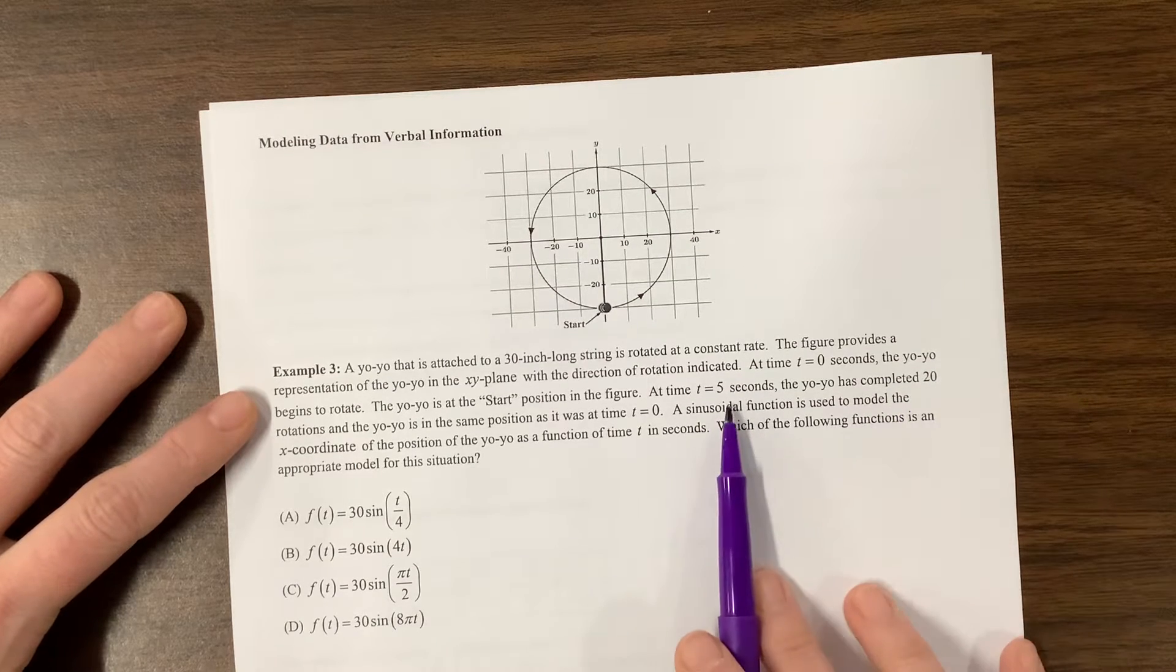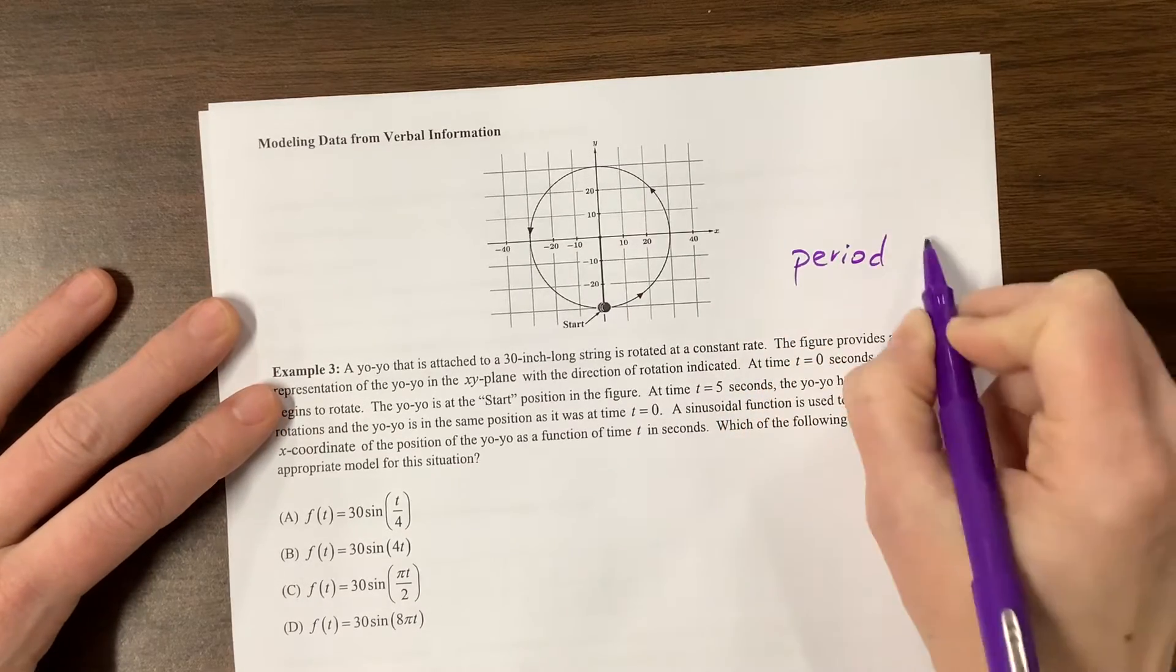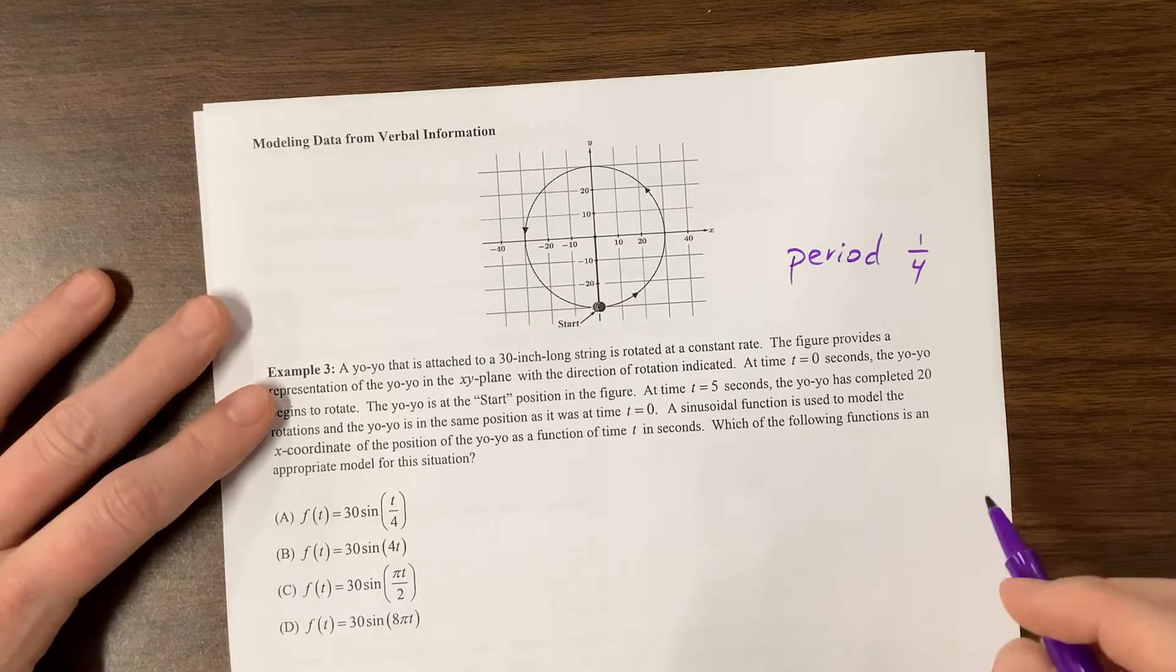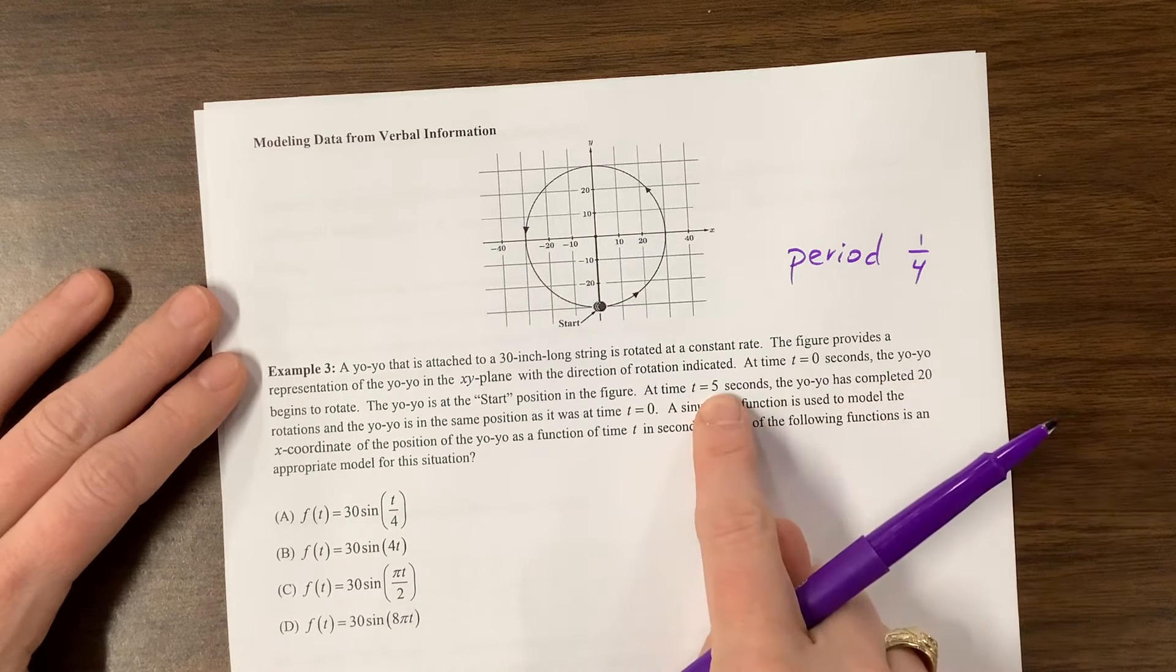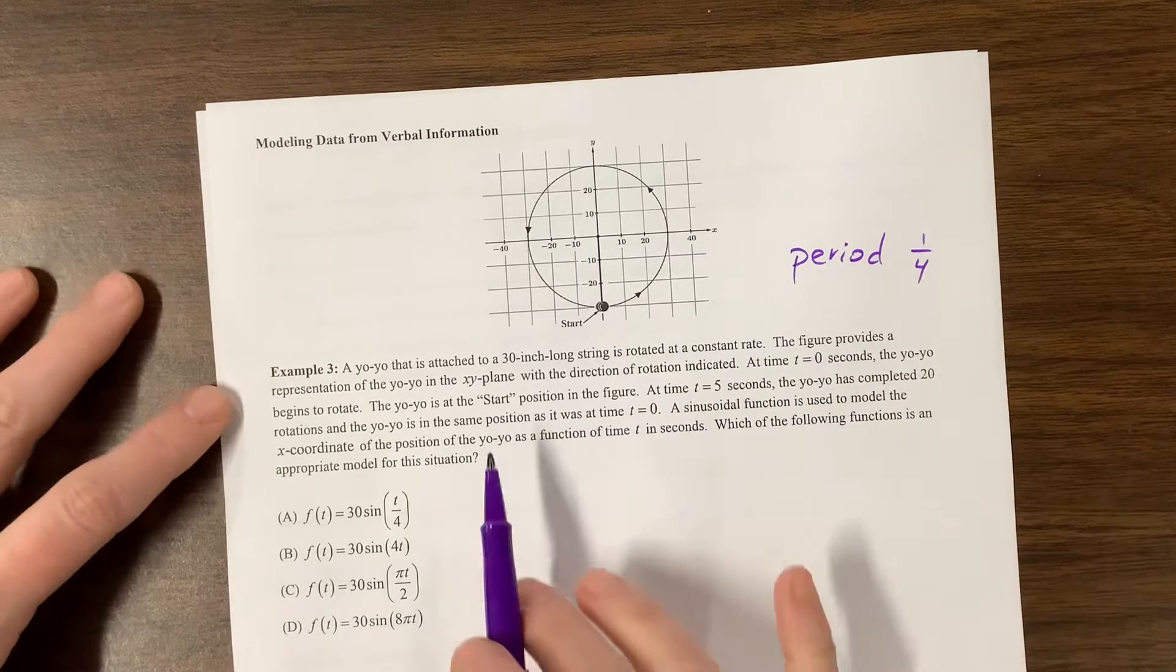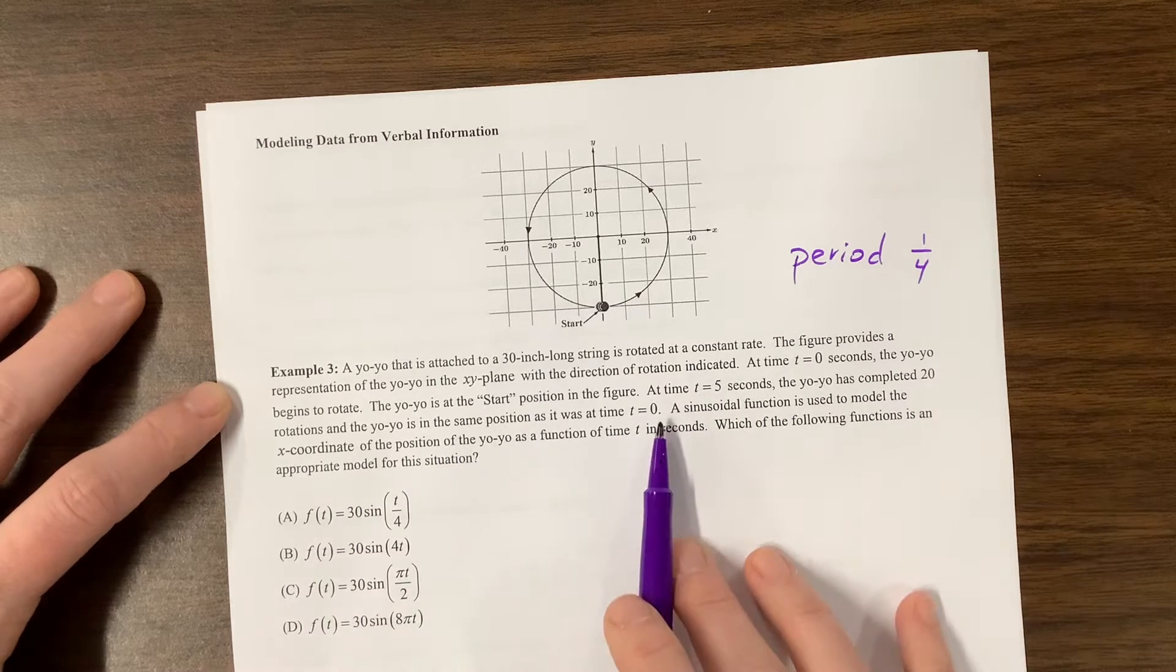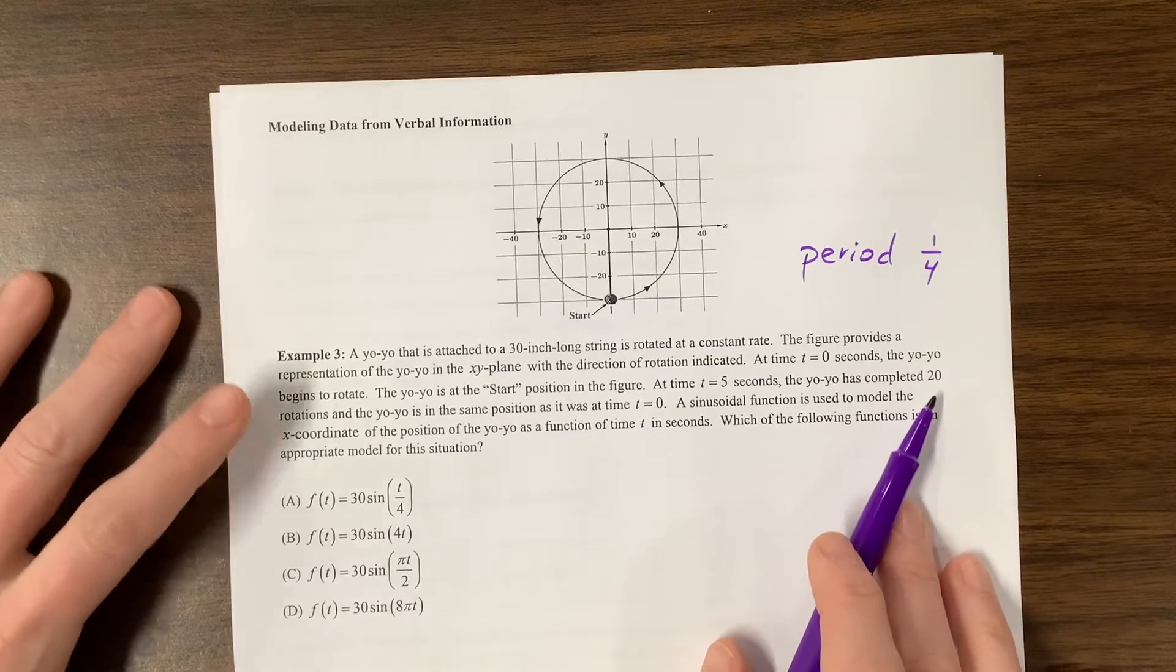The figure provides a representation of the yo-yo with a direction of rotation indicated. At time zero, the yo-yo begins to rotate. The yo-yo is at the start position. At time five seconds, the yo-yo has completed 20 rotations. So, that means it does four rotations in one second. So, the period is going to be one-fourth of a second.